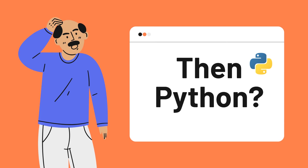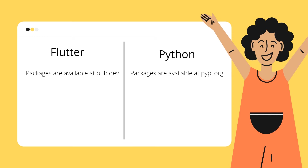When we talk about packages — say we are developing a music player app and we want to play music. If you are using a programming language without packages, you have to write code from zero. But when working on Flutter or Python, we can go to pub.dev where packages are available. We can search for a particular package and simply use it without starting from zero.